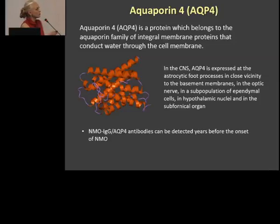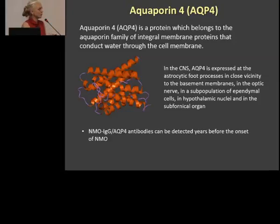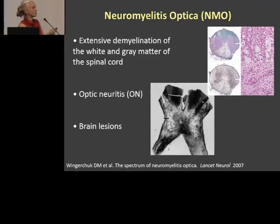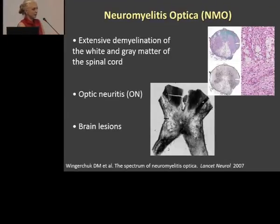Aquaporin-4 is a protein belonging to the Aquaporin family, and it is in charge of conducting water through the cell membrane. There are certain places in the brain and CNS with a very high concentration of Aquaporin-4, basically around the ventricles. Interestingly, these antibodies can be detected years before the onset of the disease. Neuromyelitis optica is not MS and not a variant of MS. It's a distinct disease that affects the spinal cord, optic nerves, and brain.